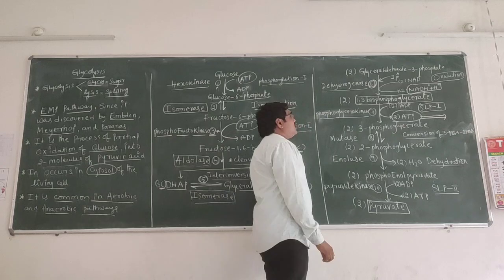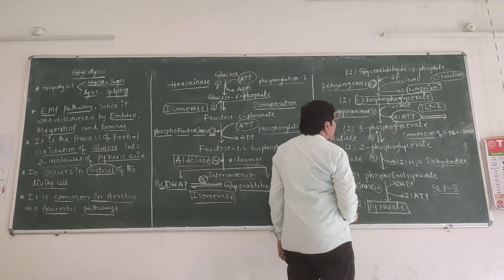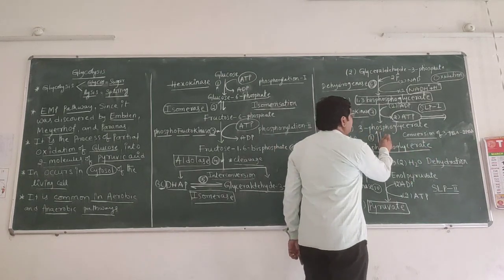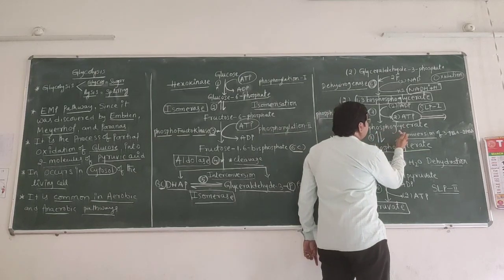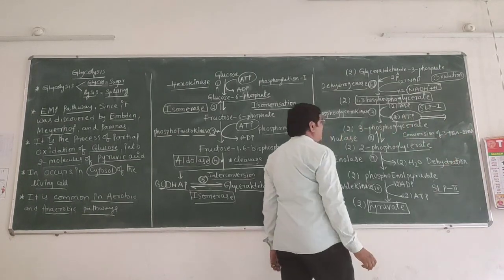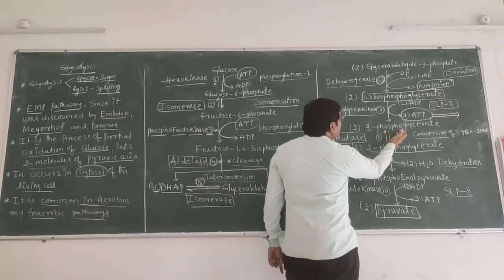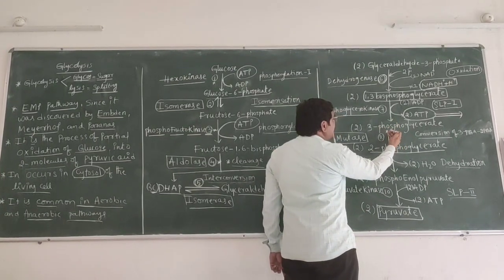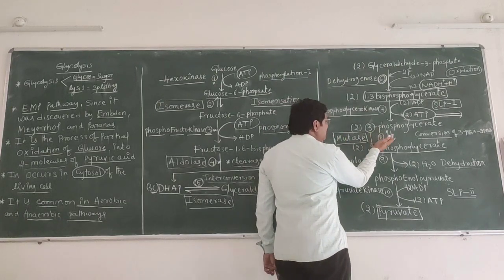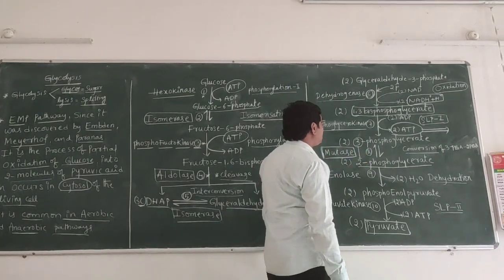The eighth reaction: 3-phosphoglycerate is converted into 2-phosphoglycerate. The phosphate group is transferred from the third carbon position to the second carbon position. This changing of the phosphate group from one position to another is catalyzed by the mutase enzyme.